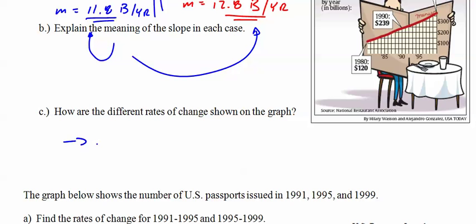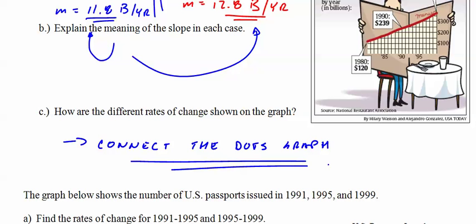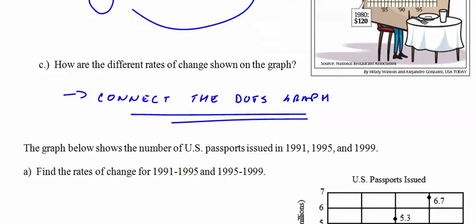It's a connect-the-dots graph. I don't know what else to call it. In math, we don't do that. We look for a constant slope. USA Today is famous for doing these goofy graphs.